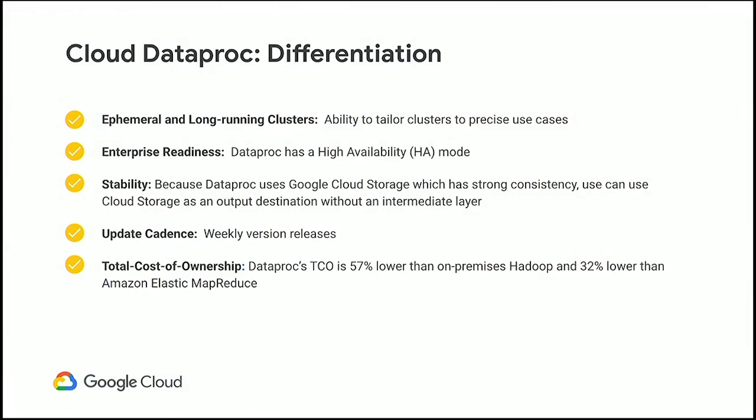Regardless of which model you choose, Cloud Dataproc has some pretty big differentiation compared to other cloud providers. With features like autoscaling and workflow templates, we make it really easy to manage both ephemeral and long-running clusters. We have a high availability mode as well as strong consistency on our storage back-end, which is Google Cloud Storage. We even received external validation from an ESG analyst that Cloud Dataproc's TCO is less than half of on-premises clusters and even 32% less than some cloud competition like Amazon EMR.